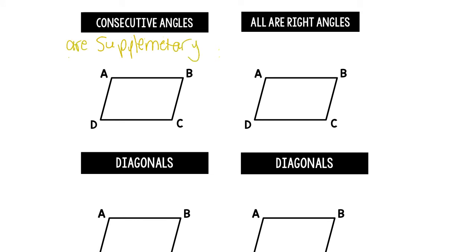That means the measure of angle A plus the measure of angle B is going to give us 180. Also, the measure of angle B plus the measure of angle C also give us 180. So any two angles that are right next to each other will give us 180.